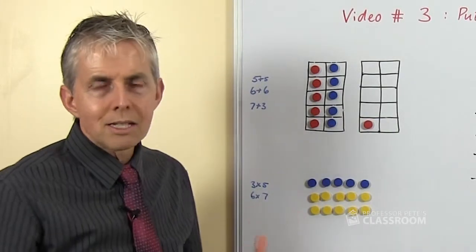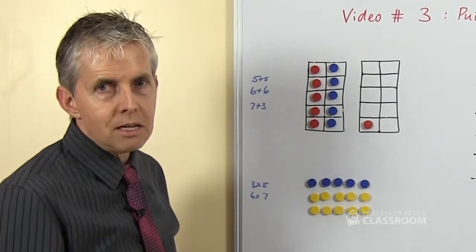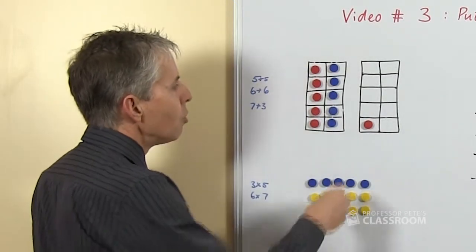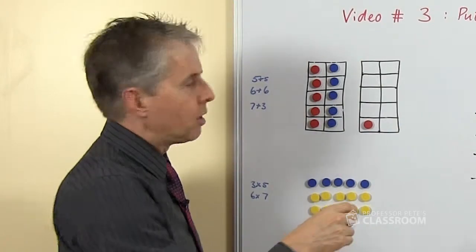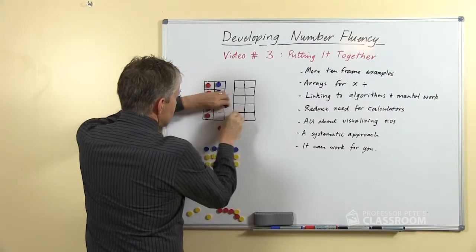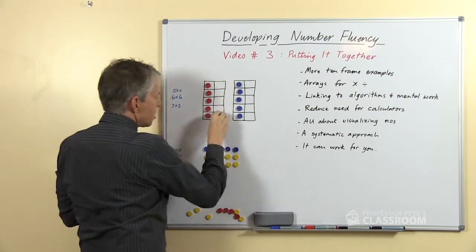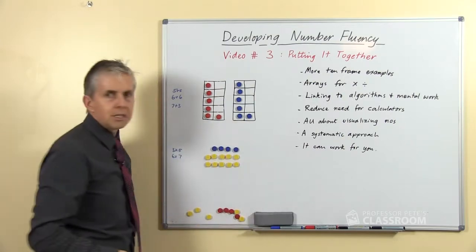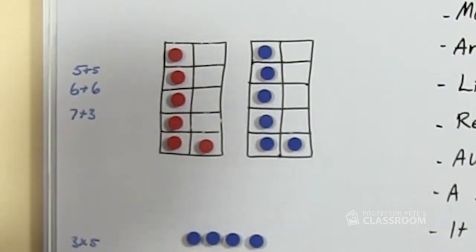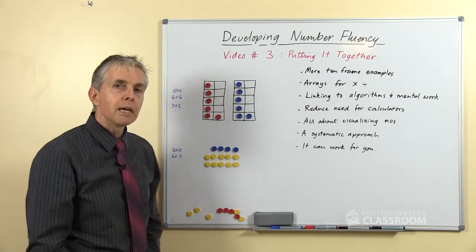But five plus six, what would that be? Well it doesn't take much for a child to be able to visualize this and see that five and six is one more than double five, which is eleven. Let's look at a slightly harder one, what about double six? One way of showing double six would be to put six in each of two 10 frames like that and then ask the students what can they see? And what number can they see?